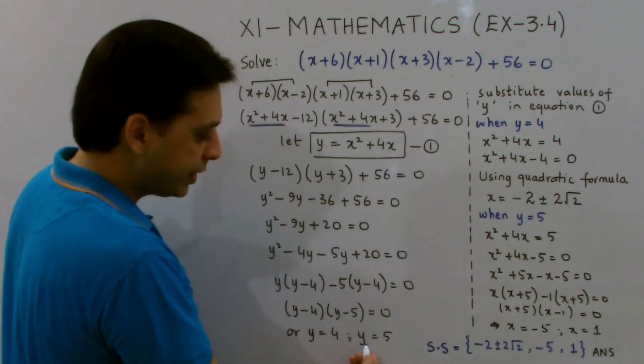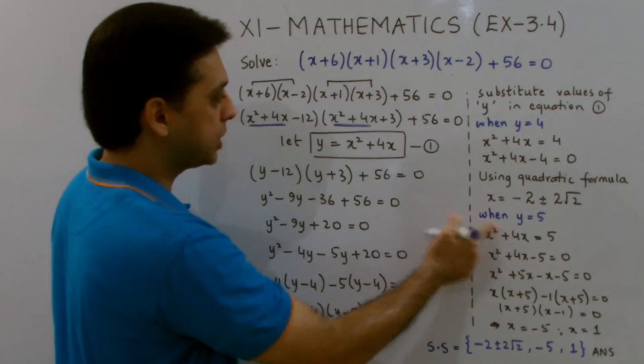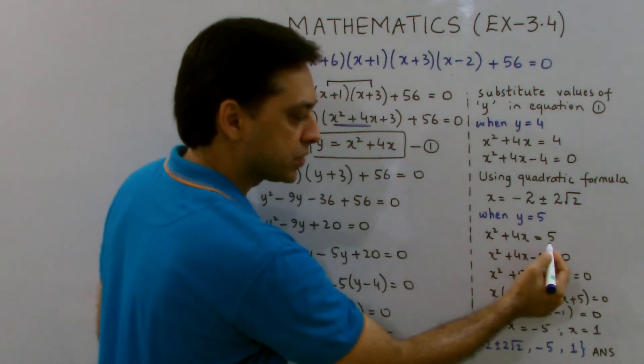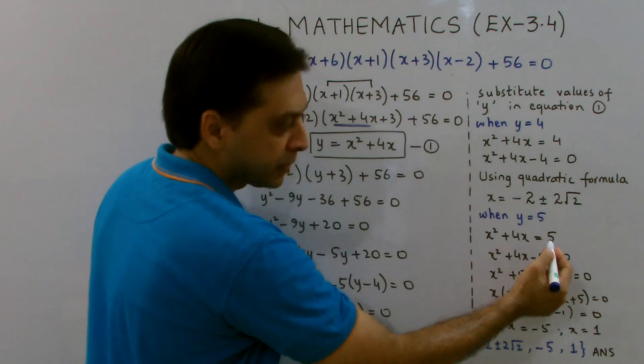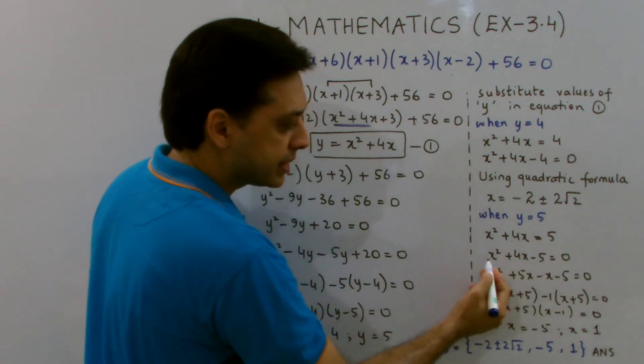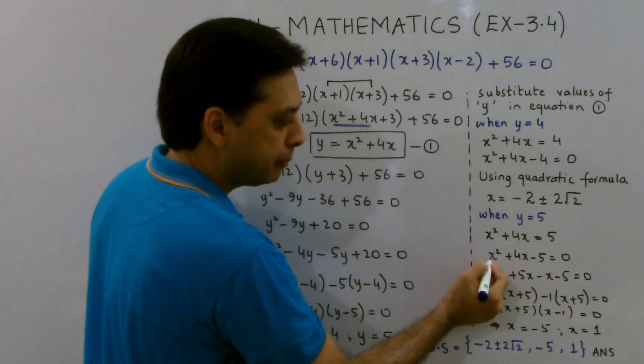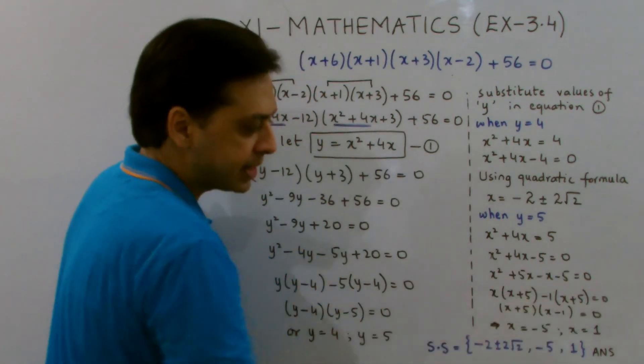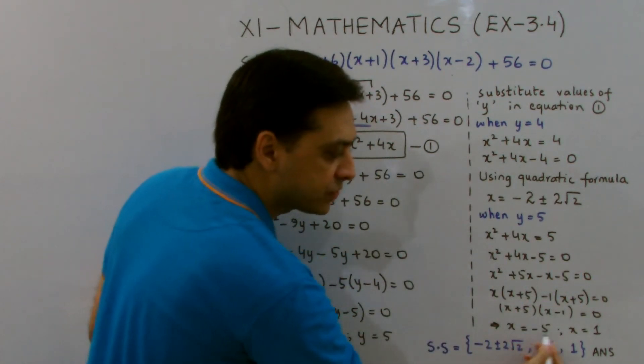Similarly, when I put this value of y equals 5 in equation 1, I get x squared plus 4x equals 5. And by adding negative 5 to both sides, I get x squared plus 4x minus 5 equals 0. Through factorization, I get the values of x, which is minus 5 and 1.